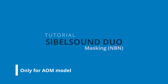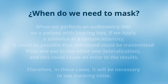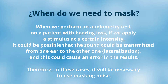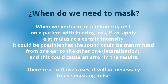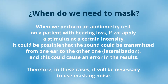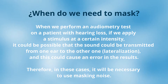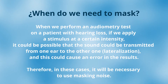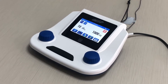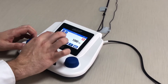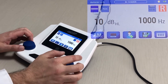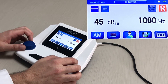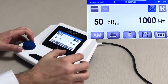Let's start a test using masking. When we perform an audiometry test on a patient with hearing loss, if we apply a stimulus at a certain intensity, it could be possible that the sound is transmitted from one ear to the other — this is called lateralization, and it could cause an error in the results. Therefore, in these cases it is necessary to use masking noise. First, we select the test with masking by the icon AM. We will see that the masking icon appears on the right side; clicking it allows us to modify its value.